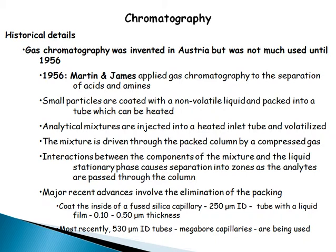Gas chromatography was invented earlier but was not much used until 1956, when Martin and James applied it to the separation of acids and amines. Small particles are coated with a non-volatile liquid and packed into a heated tube. Analytical mixtures are injected into the heated inlet, volatilized, and driven through the packed column by a compressed gas. Interaction between the components and the liquid stationary phase causes separation into zones.